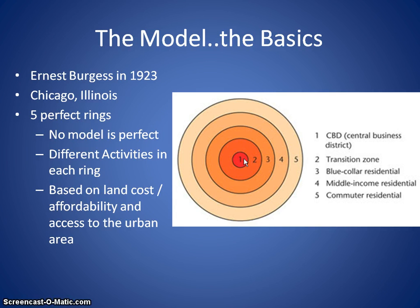One thing to remember is that no model is perfect — it's absolutely impossible to portray the landscape in a perfect way. So when we look at these five perfect circles, we know that's never going to happen in reality, but it still portrays the basic concept that activities will be distributed away from the urban center in relationship to the cost of land and accessibility to the urban center.